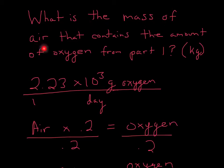We have: what is the mass of air that contains the amount of oxygen from part 1 in kilograms? The grams is 2.23 times 10 to the 3rd grams of oxygen for one day. So they want the mass of air that contains this oxygen.